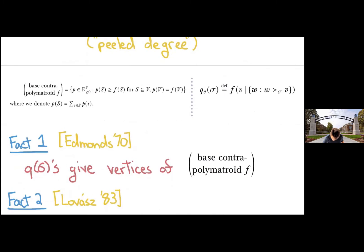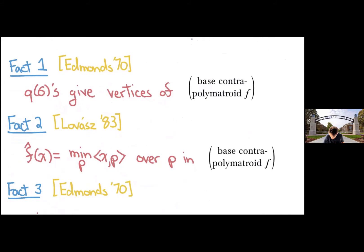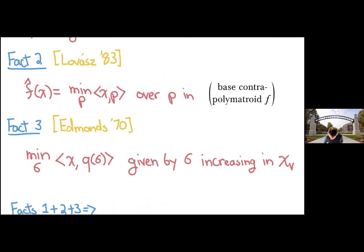So we need a few facts then that are well known. One is that these vectors induced by orderings will give you vertices of the base contrapolymatroid. The second is that the Lovász extension can be interpreted as minimizing over the base contrapolymatroid. And the other is that if you are trying to minimize over the base contrapolymatroid, you should take the ordering that's increasing in coordinates.